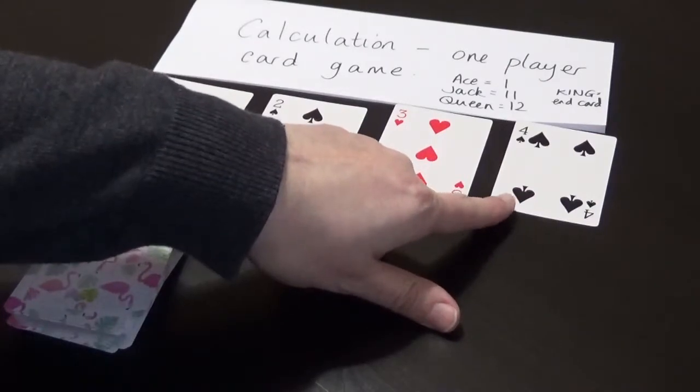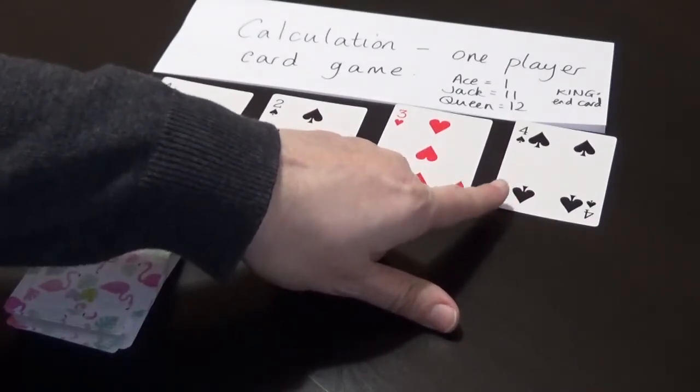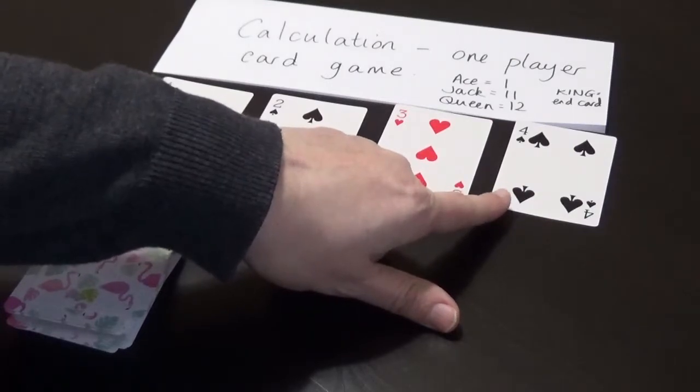And then the 4, we're going to count up in 4s. So we're looking for 4, 8, Queen, end with a King.